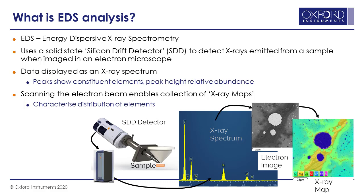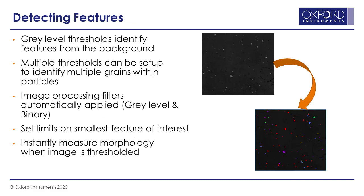We can also use electron images to detect features. Looking at a backscatter image from a sample containing particles, typically the particles have higher density than the background, so you see a black background with gray particles on it. If we threshold using gray level thresholds, we can easily segment the image to show only where there is a signal above background level — where we have our particles. We can set filters on the smallest particle size we want to detect, and then easily use that as a filter for where to go and collect the chemical information.